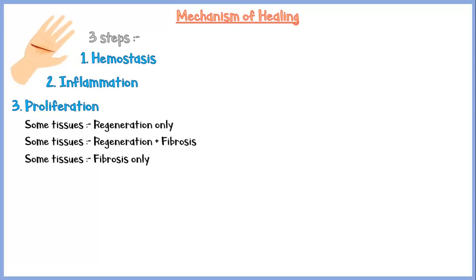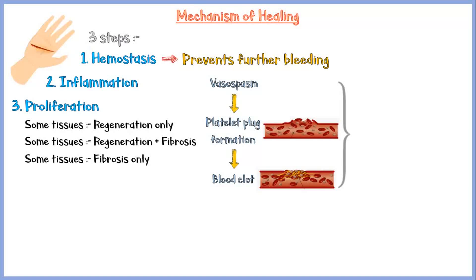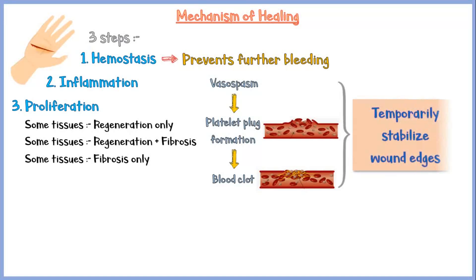Hemostasis is the initial step following an injury. It will prevent further bleeding from the site of injury. At first, there will be vasospasm to reduce blood flow to the area. Then the platelets get activated and clump together to form a platelet plug. Finally, due to the activation of clotting factors, fibrin gets deposited on the platelet plug to form a blood clot, which temporarily stabilizes wound edges and prevents further bleeding.